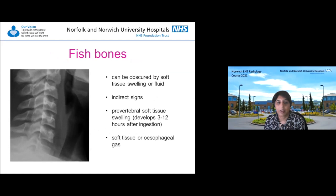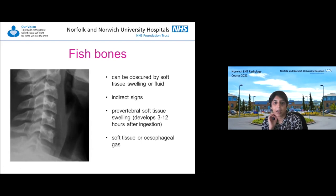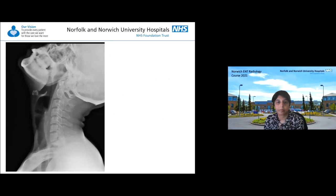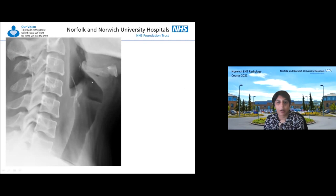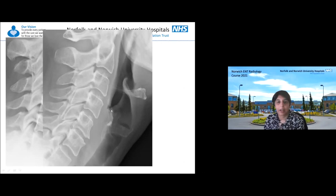This patient does have a fish bone - you can just see that linear density there. They can be obscured by soft tissue swelling, so you may need to look for indirect signs such as prevertebral soft tissue gas or swelling. Even if you can't see anything, if you're still particularly worried, you still need to interrogate the film for any other signs. Here at the level of C5, and in another example with the hyoid bone, you can just see the fish bone overlying the cartilage and within the pharynx.